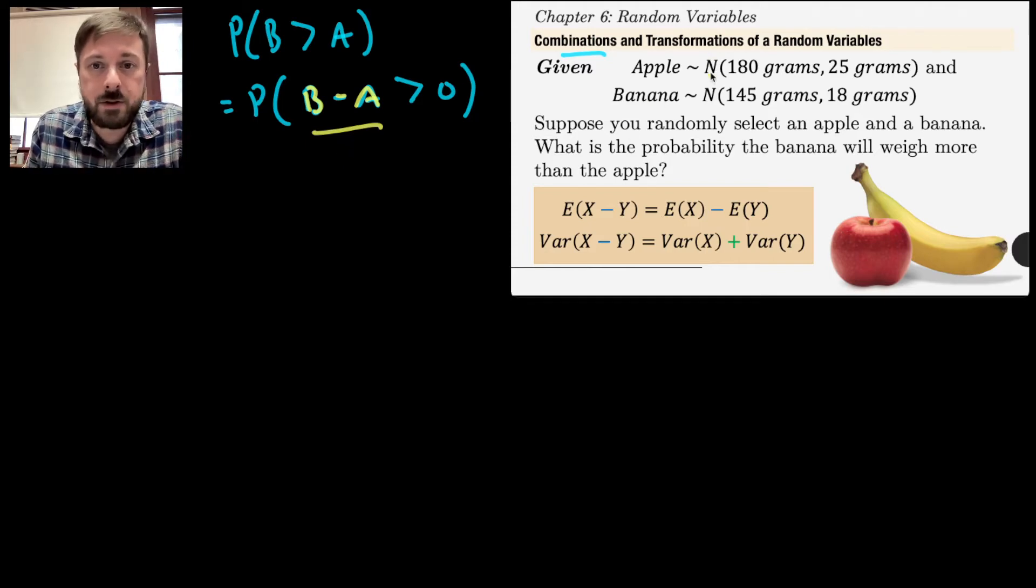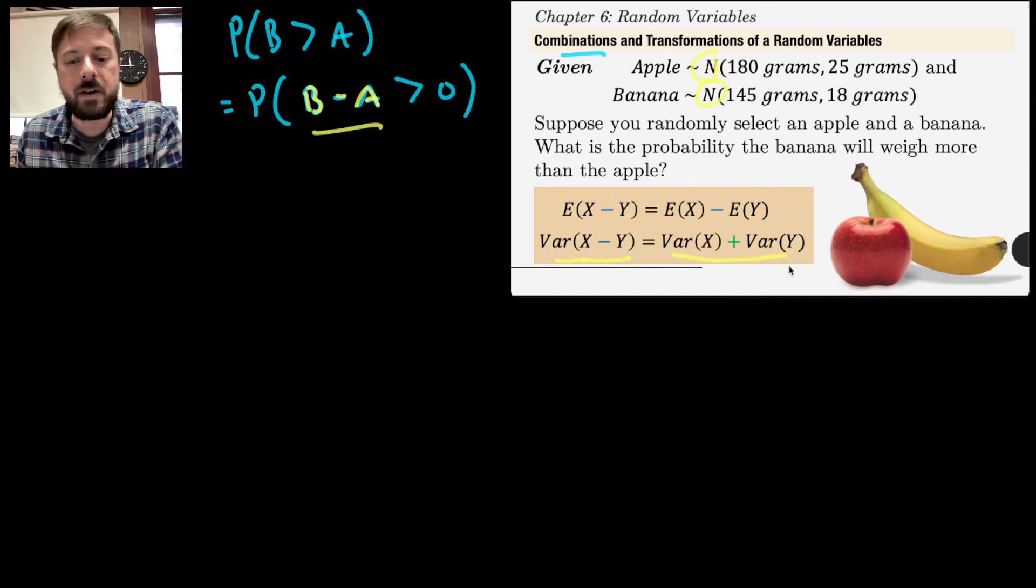We ended up seeing that so long as these two variables were both normally distributed, that their difference would be also normally distributed, and that you could subtract the expected values to get the mean of this distribution. But interestingly enough, this is what was kind of interesting, that if we wanted to know the variance of B minus A, instead of subtracting their respective variances, we would still add them. Even when we're subtracting two variables to get the variance of the difference of those variables, we're still going to add the separate variances from each of the individual variables.